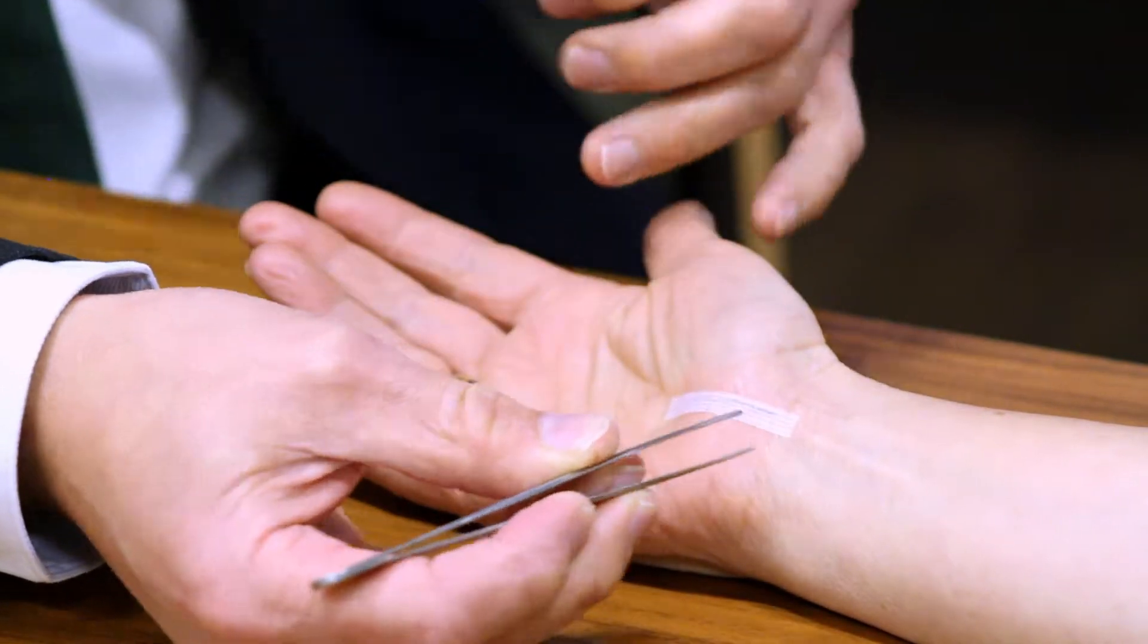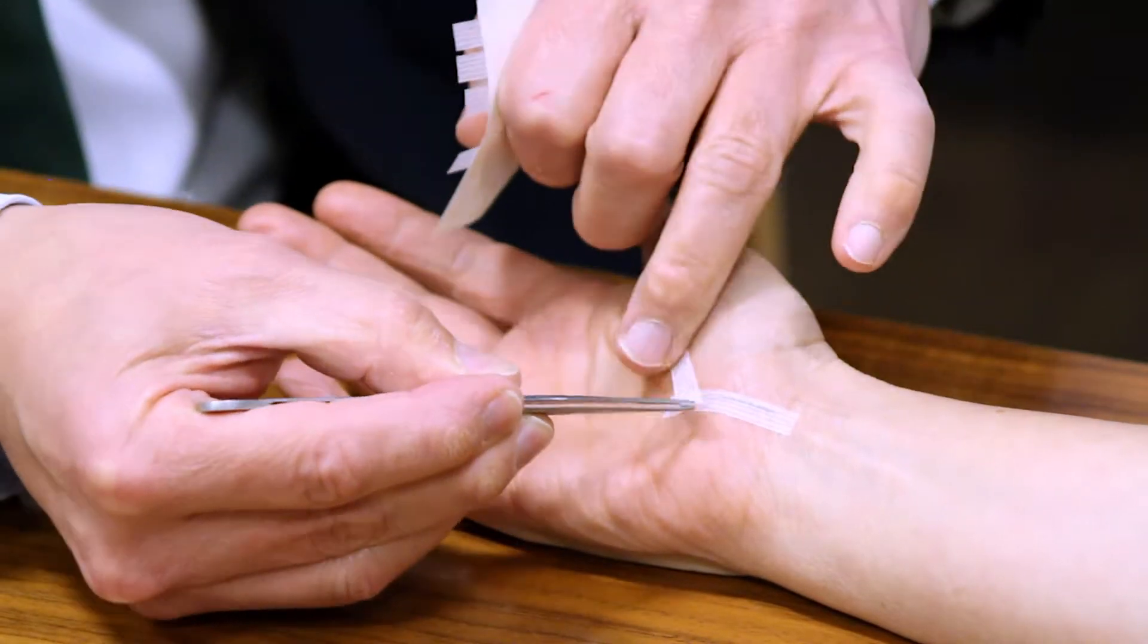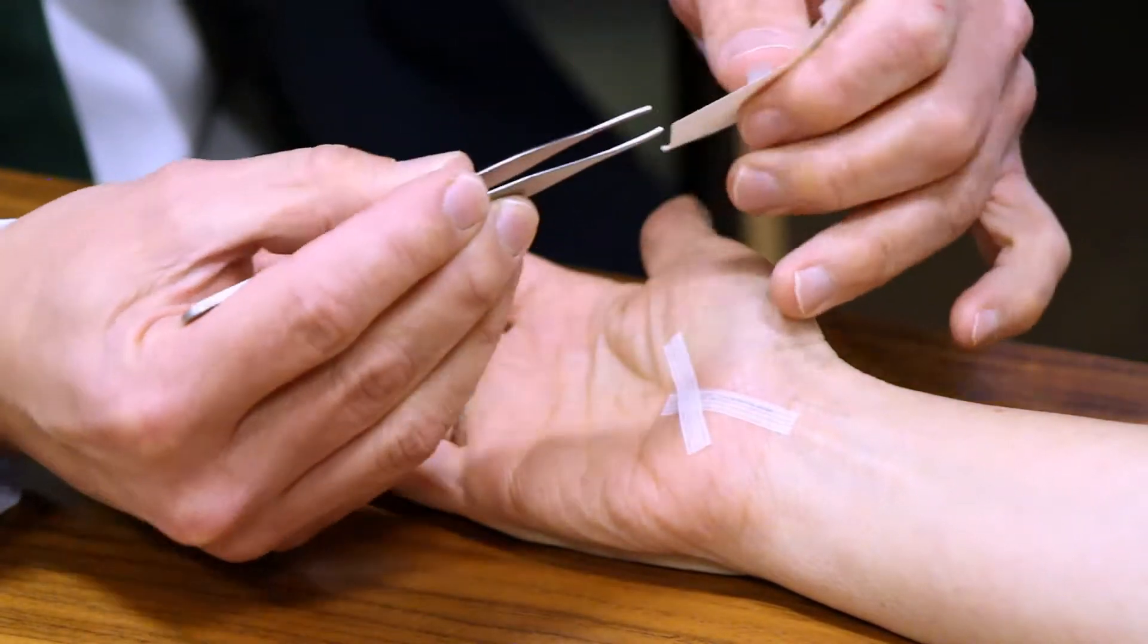And I usually lay a strip along the wound like that to prevent it bleeding. And then we put this across usually obliquely. These are little Steri-strips that we put across here like this.